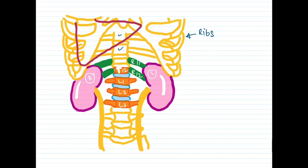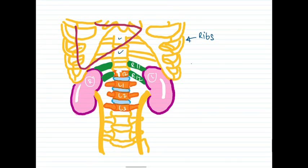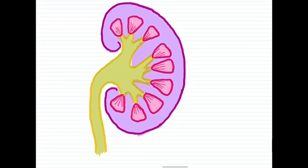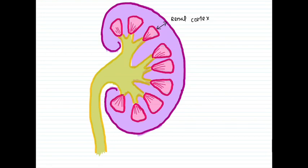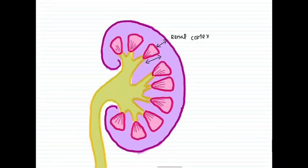There will be questions on the basic structure of the kidney. If you cut the kidney longitudinally downwards, this is the appearance you will see — a cross-section showing the renal medulla, cortex, and urinary flow through the kidney. The purple area is the renal cortex and the pink area is the renal medulla.